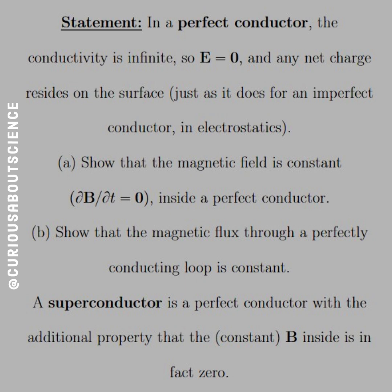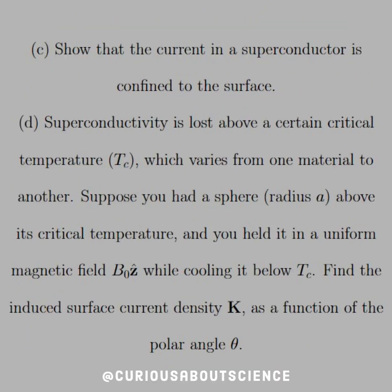And then a superconductor is a perfect conductor with the additional property that the constant B field inside is, in fact, zero. Ooh, that's cool. Part C: Show that the current in a superconductor is confined to the surface.